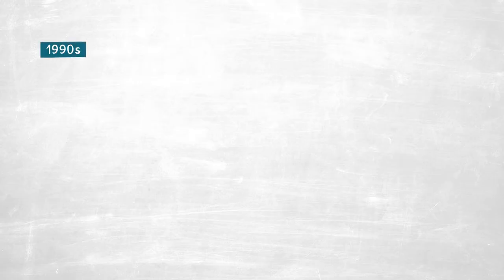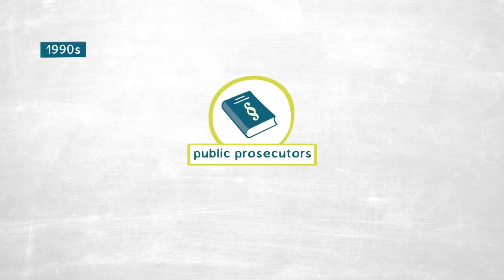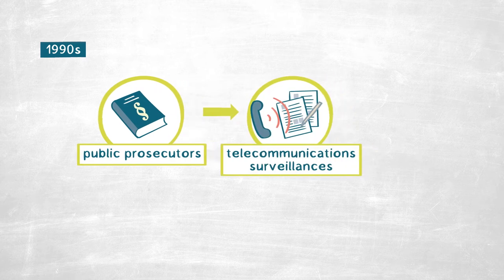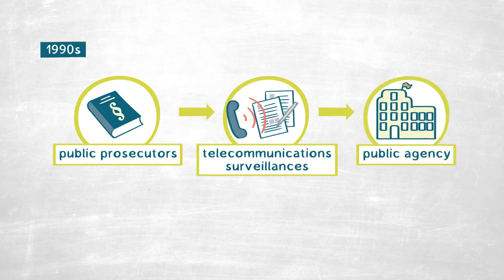But then I was reminded of a small episode from the 90s. The legislator introduced the obligation of public prosecutors to report the number of telecommunications surveillances to a public agency where it is visible for the general public. The first year that the numbers were reported, it was picked up by the national press because there were quite stark discrepancies between the number of surveillances of telecommunications in the different German states, which steered a discussion about why we have these discrepancies.